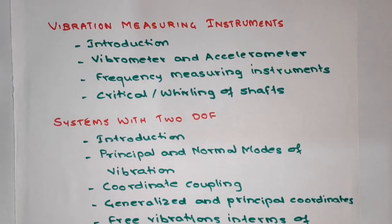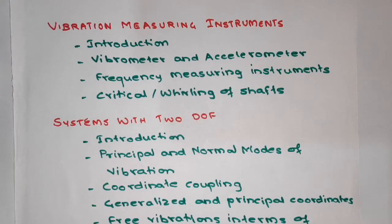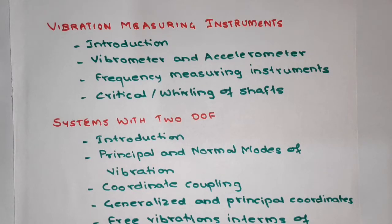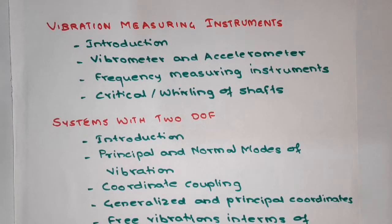In chapter five, we will be seeing vibration measuring instruments. First, an introduction to what these instruments are, then in particular, what is a vibrometer and an accelerometer — how they work and what the governing equations are. We will also see frequency measuring instruments, and then what is the critical speed and whirling of a shaft.